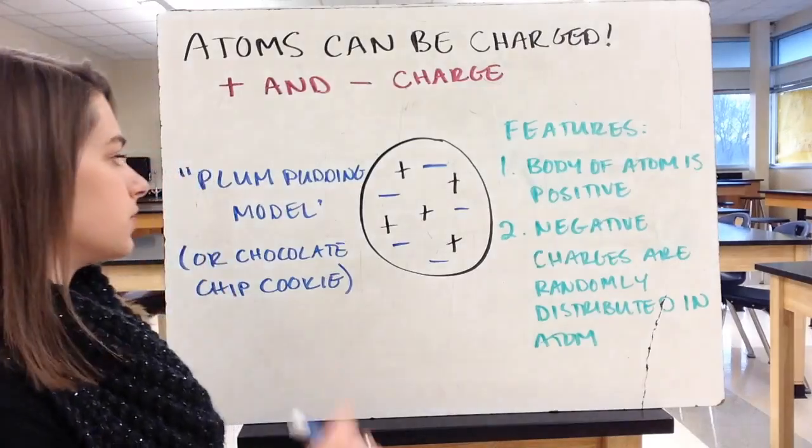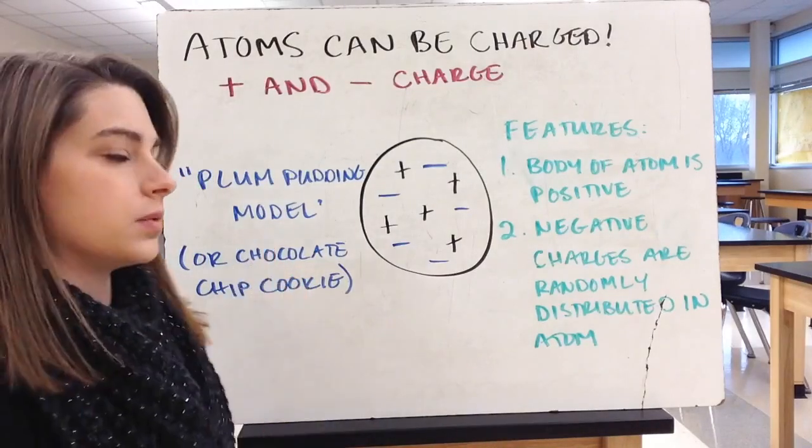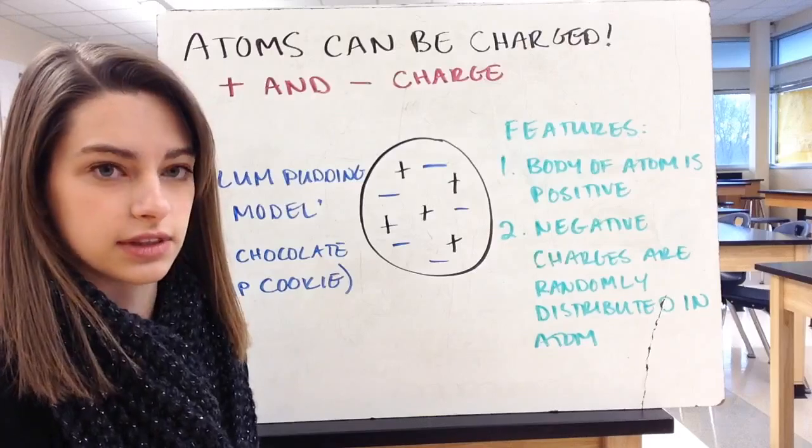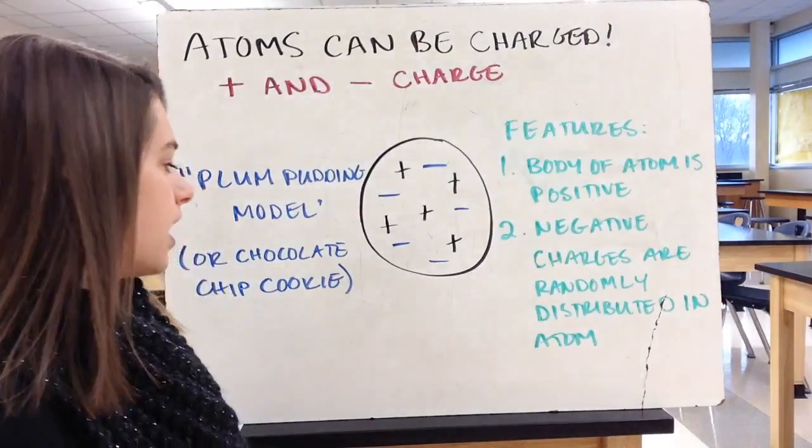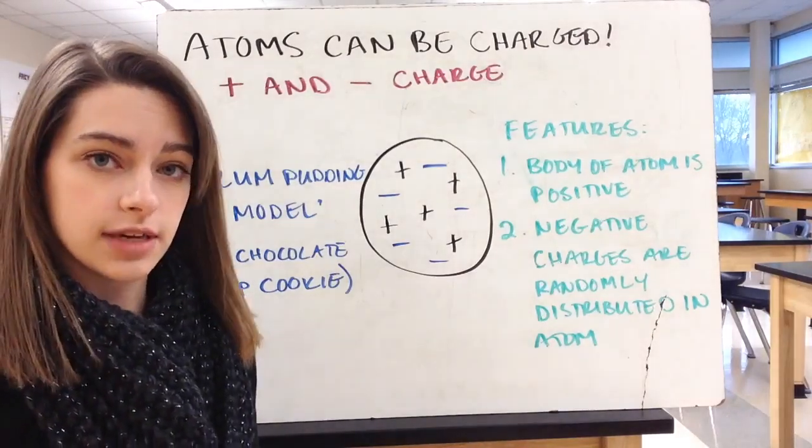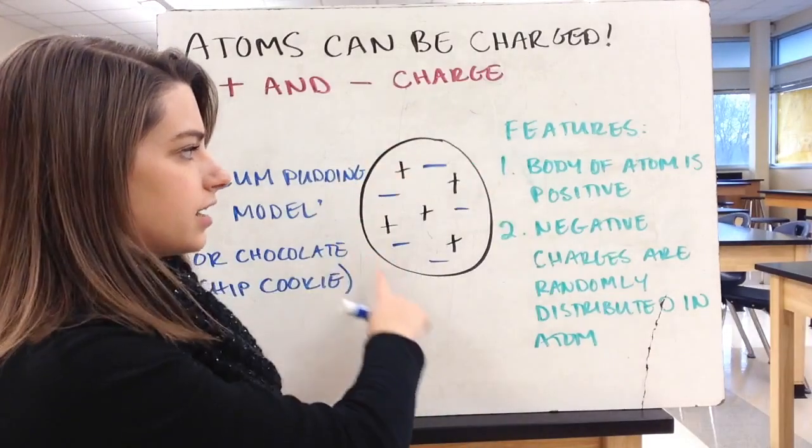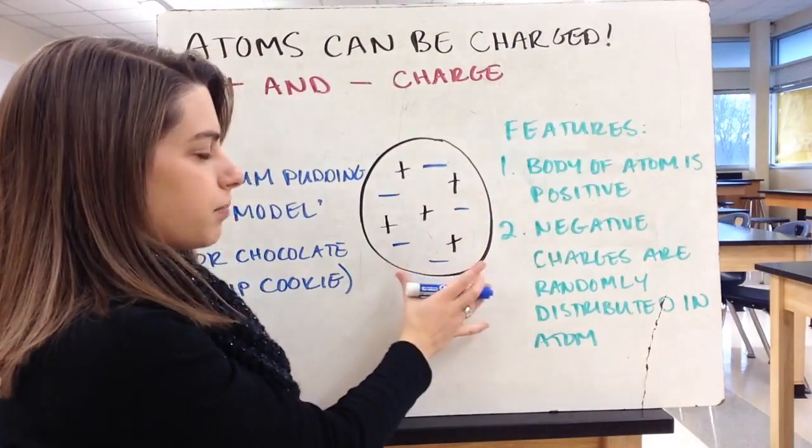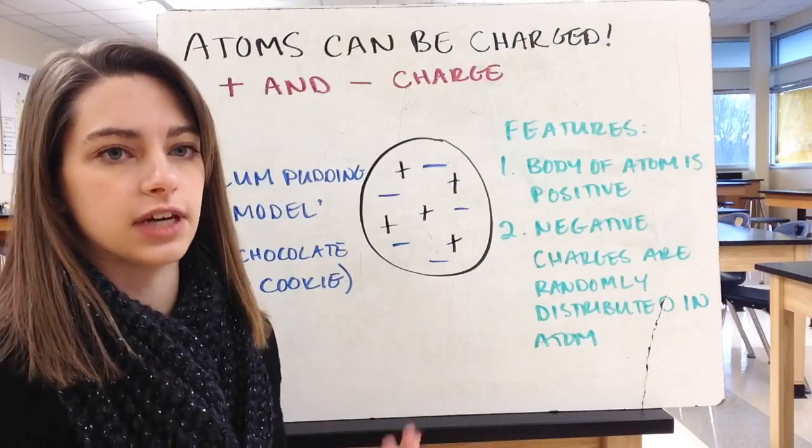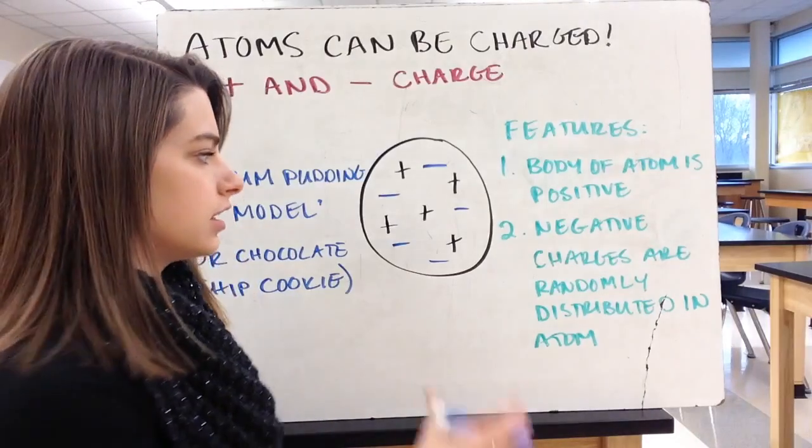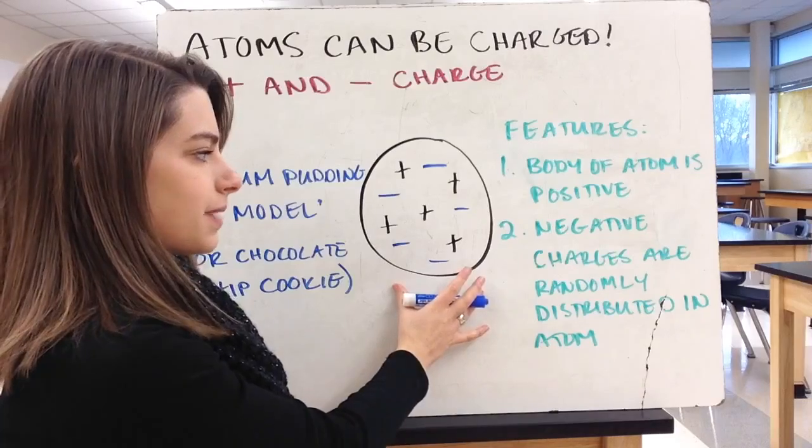It's commonly referred to as the plum pudding model, which is a dessert sort of dish from England. I like to think of it as the chocolate chip cookie model, because that's something that we see a lot more often. In this atom, it's the body, the bulk of the atom is positive. We don't have specific positive charges yet. Just the body of the atom as a whole is positive.